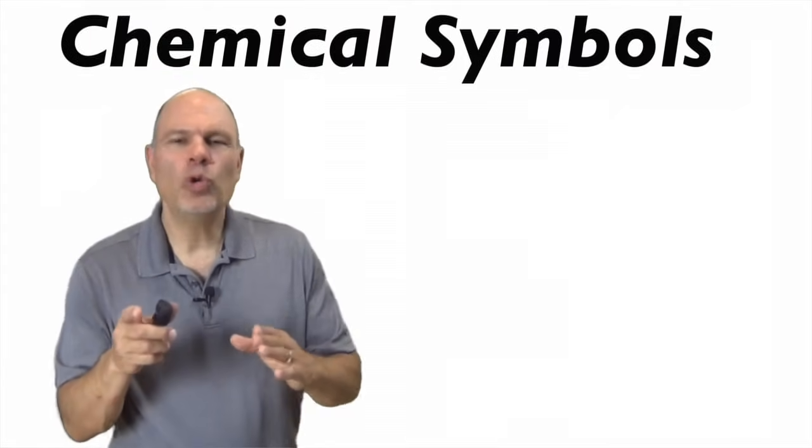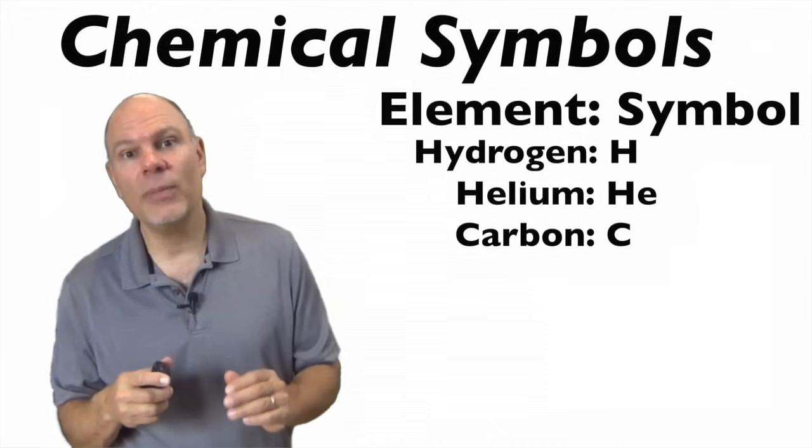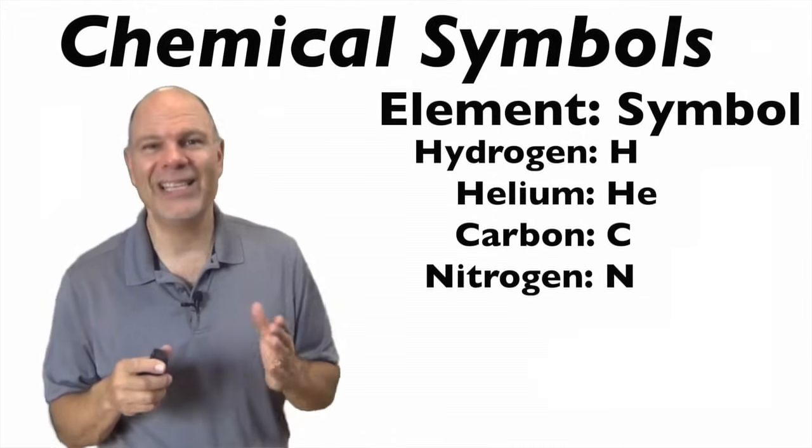Each element has its own one or two letter chemical symbol, and those are usually pretty easy to remember. Hydrogen symbol is H, helium symbol is He, carbon symbol is C, nitrogen symbol is N.